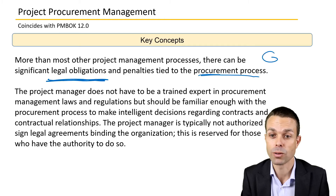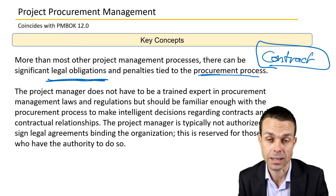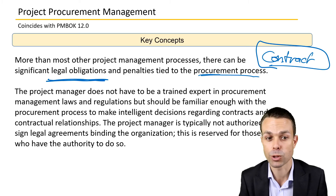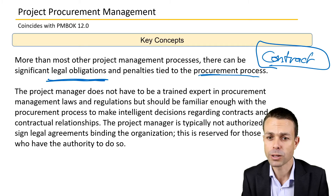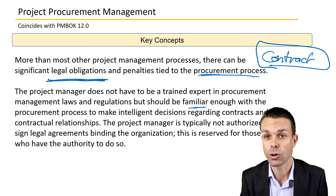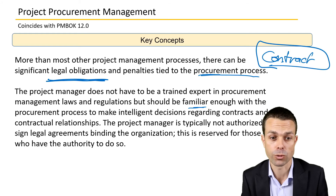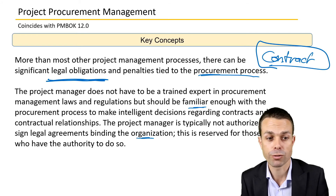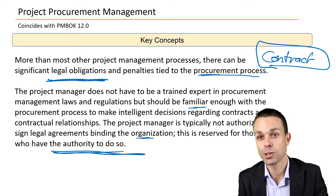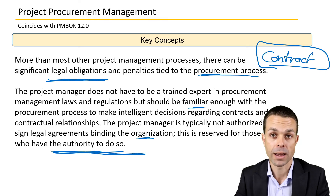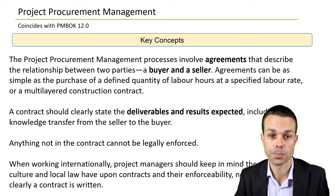Key concepts for project procurement management: there can be significant legal obligations and penalties tied to the procurement process. There is almost always a contract involved, which means an agreement and money — we're paying someone for their services. The project manager does not have to be a trained expert in procurement laws and regulations but should be familiar enough with the procurement process to make intelligent decisions regarding contracts and contractual relationships. The project manager is typically not authorized to sign legal agreements binding to the organization.